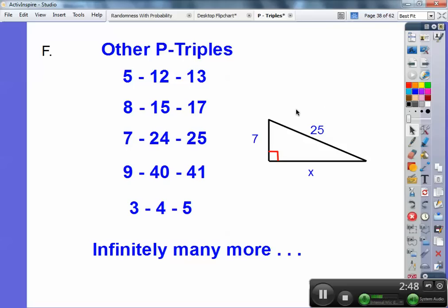Say, for example, I gave you this right triangle and it said solve for x. You can do your Pythagorean theorem and write down 7 squared plus x squared equals 25 squared and crank out your algebra. You're going to end up getting 24, but I knew it was 24 because it came from this P-triple. It was the missing piece to that P-triple.